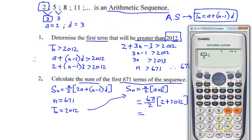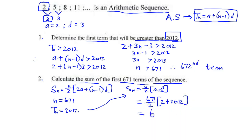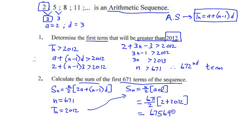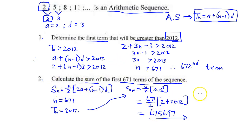That gives us 671/2 × 2014 = 675,697. That is our solution. Quick recap: we are dealing with an arithmetic sequence where the first difference is constant, and we looked at sum to n terms of an arithmetic sequence. Note that if we use the first sum formula, we would also get the same answer.